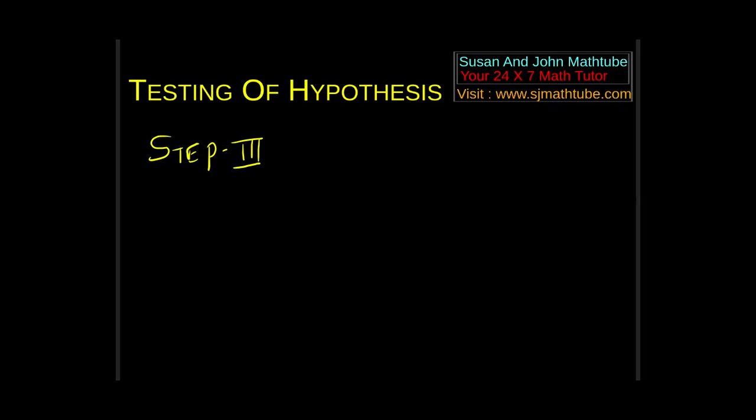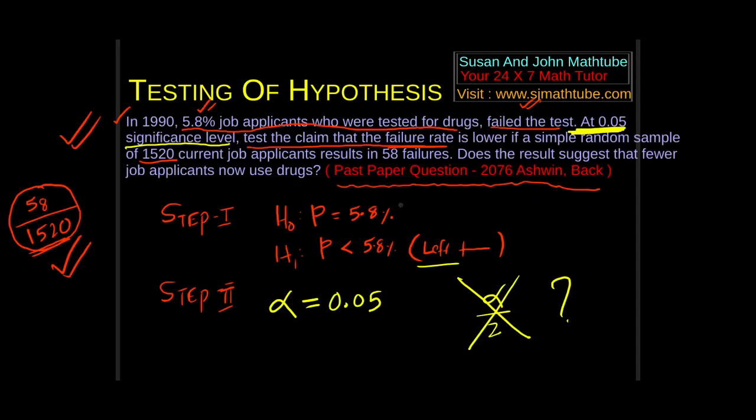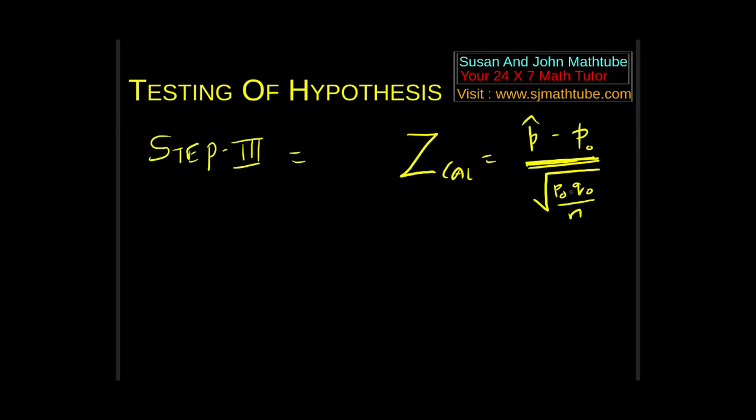Step number 2. If you read the question carefully, you will see step number 2 here. At 0.05 plus a significance level. I am going to write alpha equal to 0.05. Should I take alpha by 2? No. What is the reason? It is not a two tailed test.